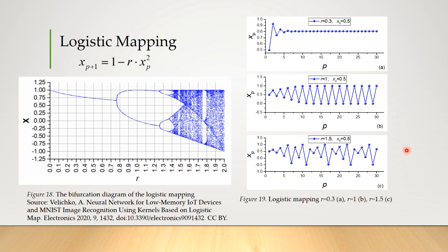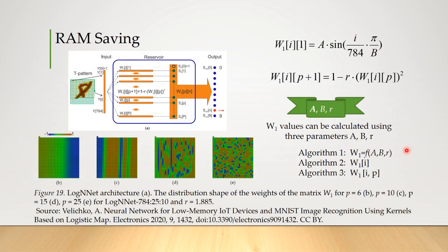The RAM saving in the presented algorithm is achieved as the W1 array does not need to be stored in memory. Each of its values can be calculated using three parameters A, B, R, and these three parameters can determine an infinite series of chaotic numbers. If we look at the distribution of weights in the row in 2D format, then the first line, determined by the sine equation, looks like the first filter, then this filter is modified and eventually takes a chaotic form.